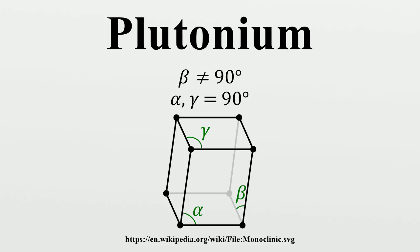Plutonium is the heaviest primordial element by virtue of its most stable isotope, plutonium-244, whose half-life of about 80 million years is just long enough for the element to be found in trace quantities in nature. Plutonium is much more common on Earth since 1945 as a product of neutron capture and beta decay, where some of the neutrons released by the fission process convert uranium-238 nuclei into plutonium-239.